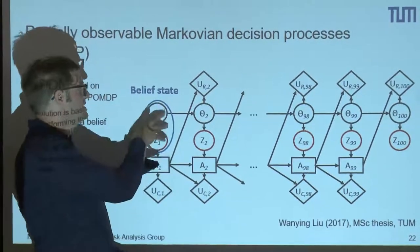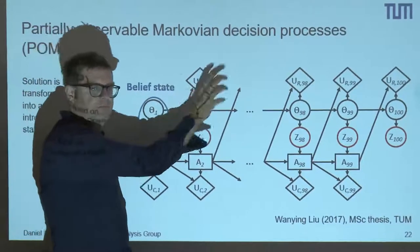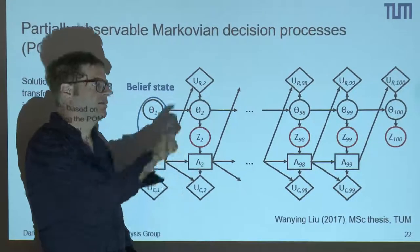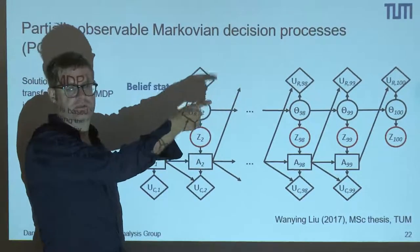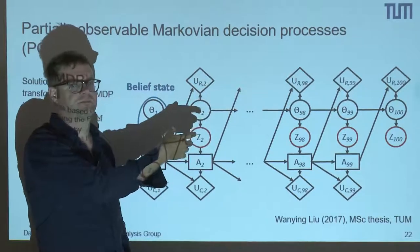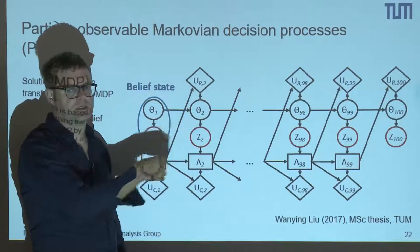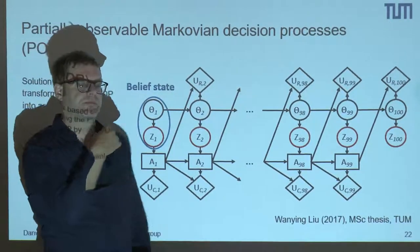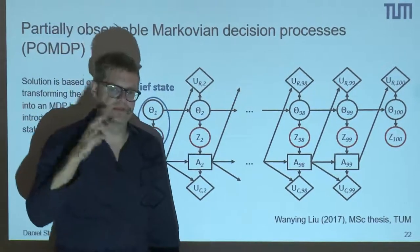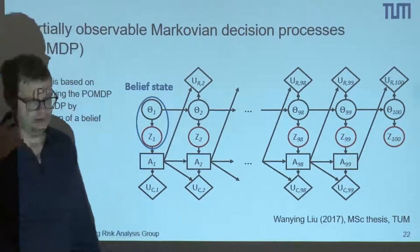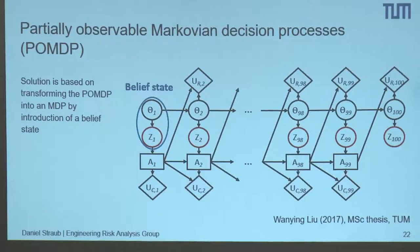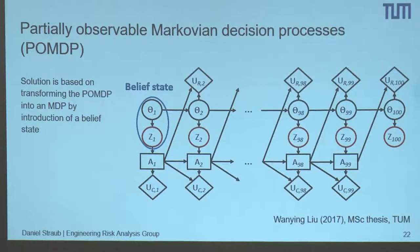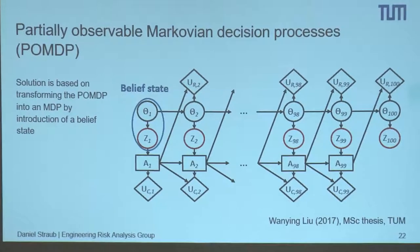What turns out is that if we fix this belief state — which includes both the prior information and all observations — then we have again a Markovian decision process, just not in terms of the original state but now in terms of the belief state B. Then we can go back and use the solution to the Markovian decision problem. That's the basic concept of the POMDP in a nutshell.